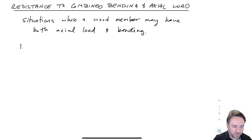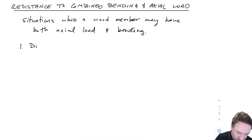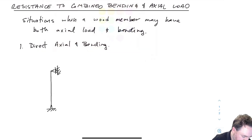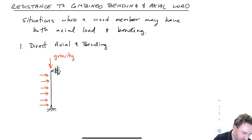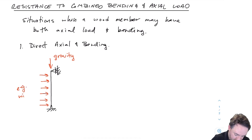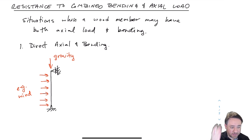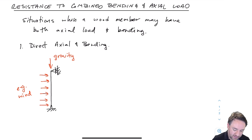What are the situations where we might run into combined loading? The most obvious is where I actually have directly an axial load and a bending load simultaneously. For example, I have a column with an axial load caused by gravity, and it also has a lateral load along its length — such as a direct wind load — which could bend the column. So now I have both bending and axial load.